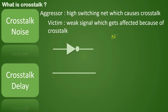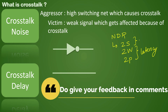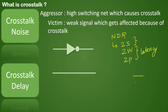To prevent crosstalk, we apply something called NDR — a non-default rule — to the clock net. This generally includes double spacing, double width, and double pitch. Double spacing means if the normal spacing is 10 microns, the clock signal spacing is doubled to 20 microns. This ensures enough spacing so that interaction between adjacent signals is lesser.